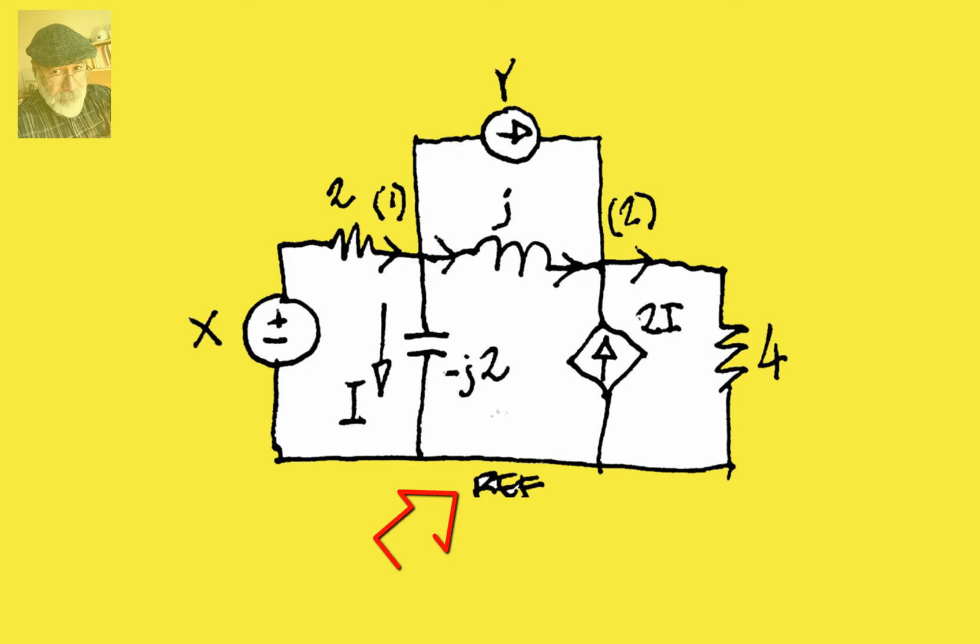If we choose this as the reference and identify nodes 1 and 2, we notice we need two other equations, one KCL 1 for node 1 over here, and one KCL for node 2. The directions for the branch currents have been chosen already arbitrarily, as usual, except for the controlling current i and for the current sources.